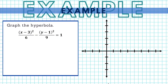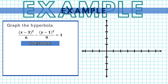Now let us start with this example. We have to graph the hyperbola given the equation: (x minus 3) squared over 6, minus (y minus 1) squared over 9, equals 1. First, I'll determine the orientation. Since the positive term includes the x variable, this is a horizontal hyperbola. The center is at (h, k) where h is beside the x variable and k beside the y variable, giving us a center at (3, 1), which is in the first quadrant.